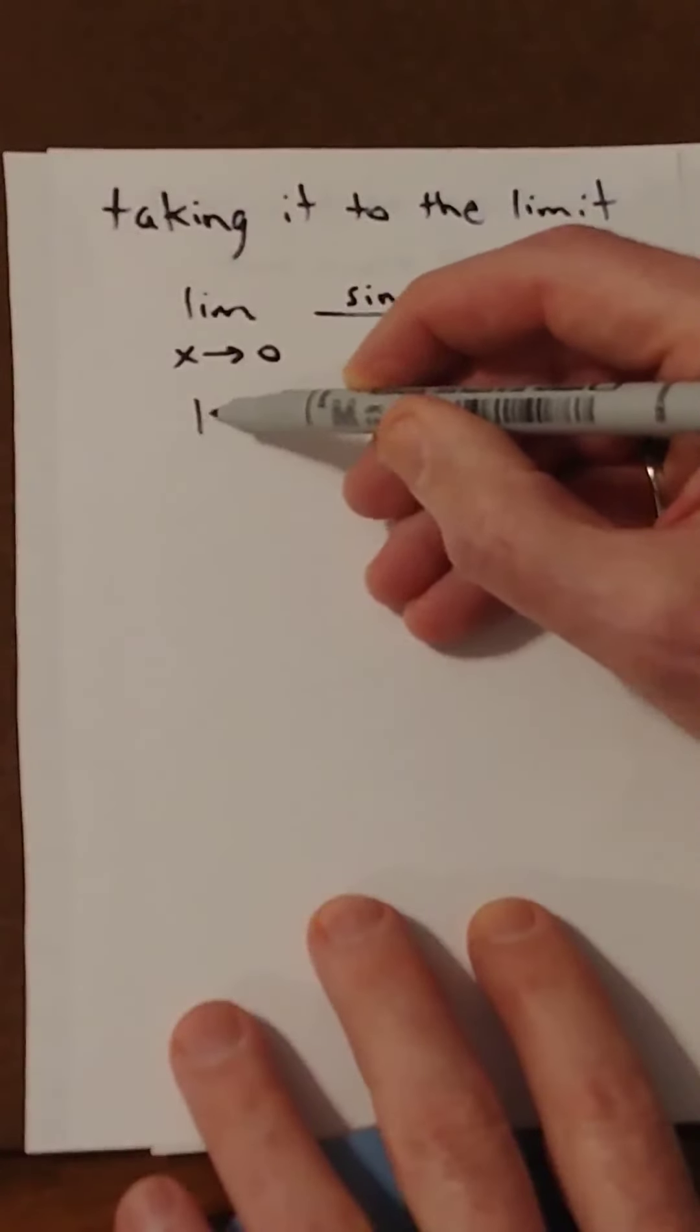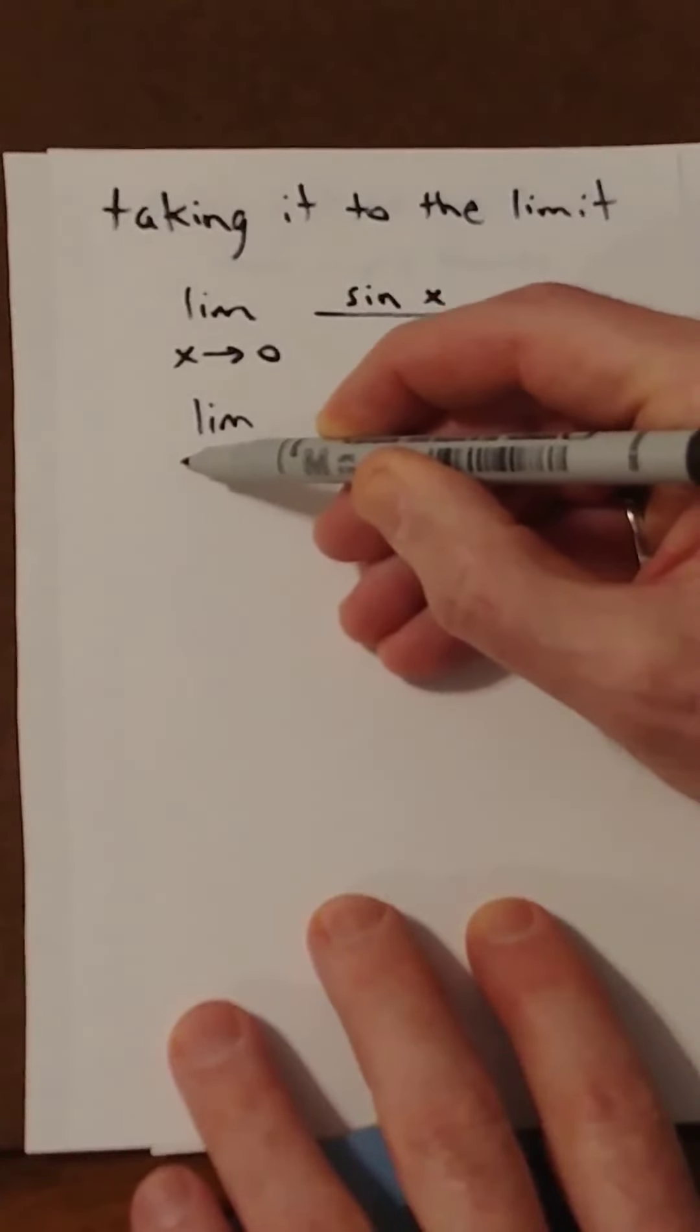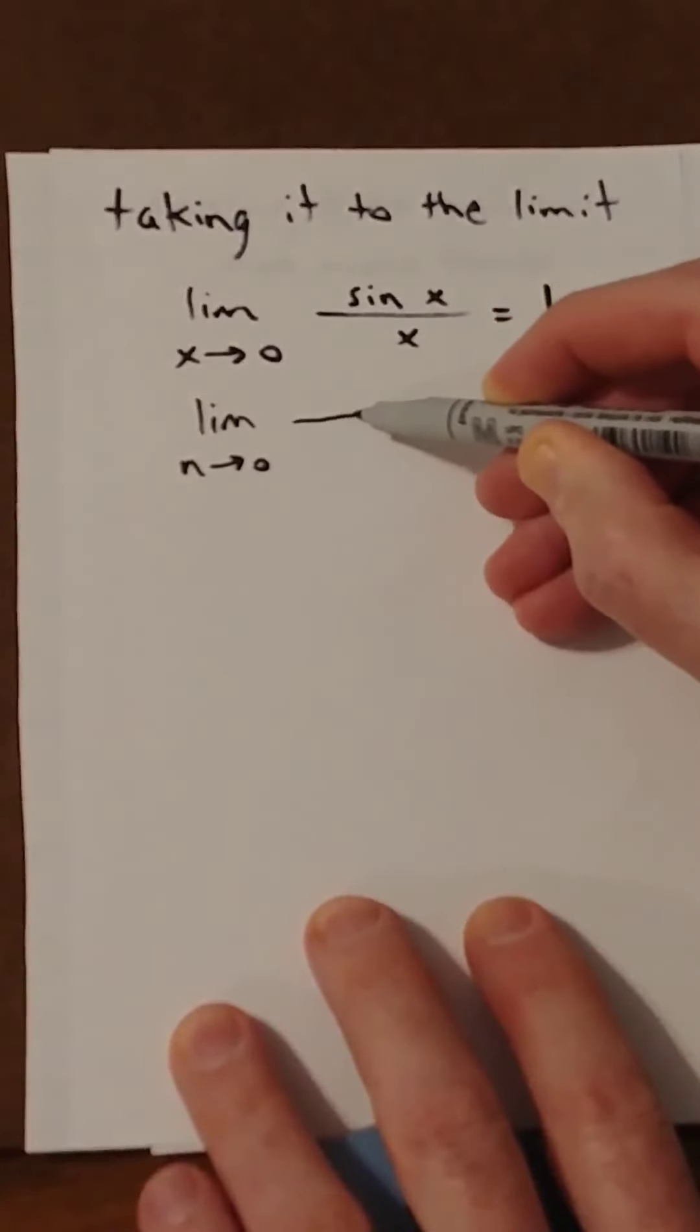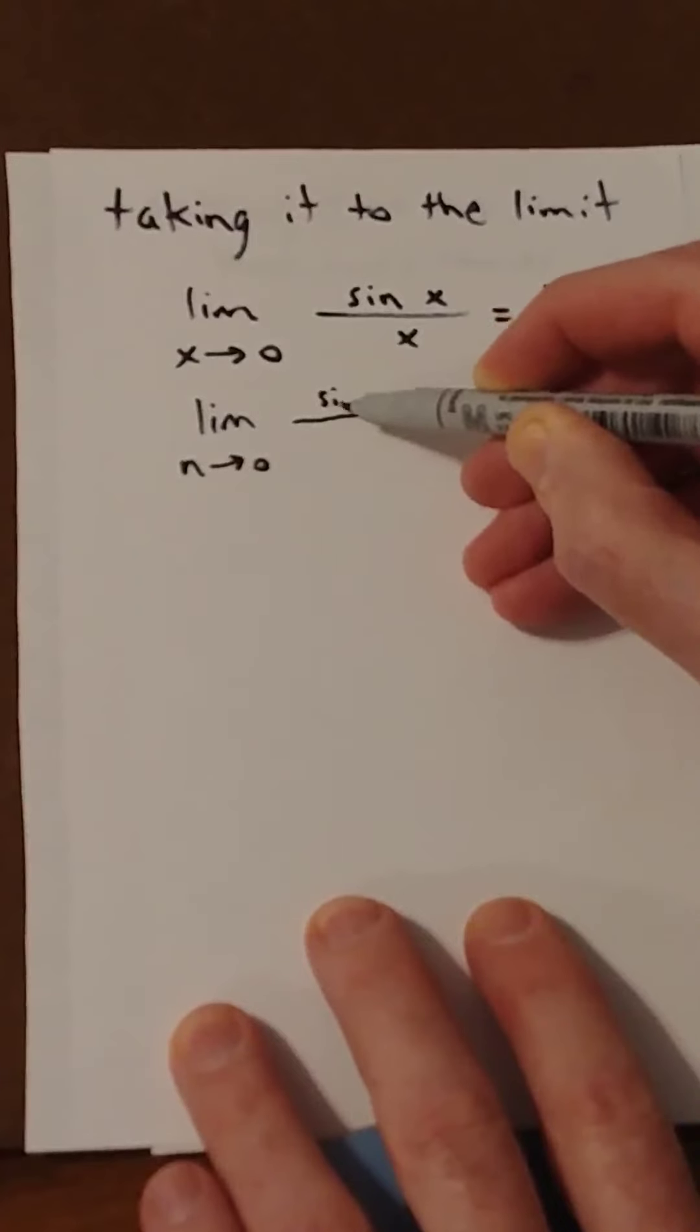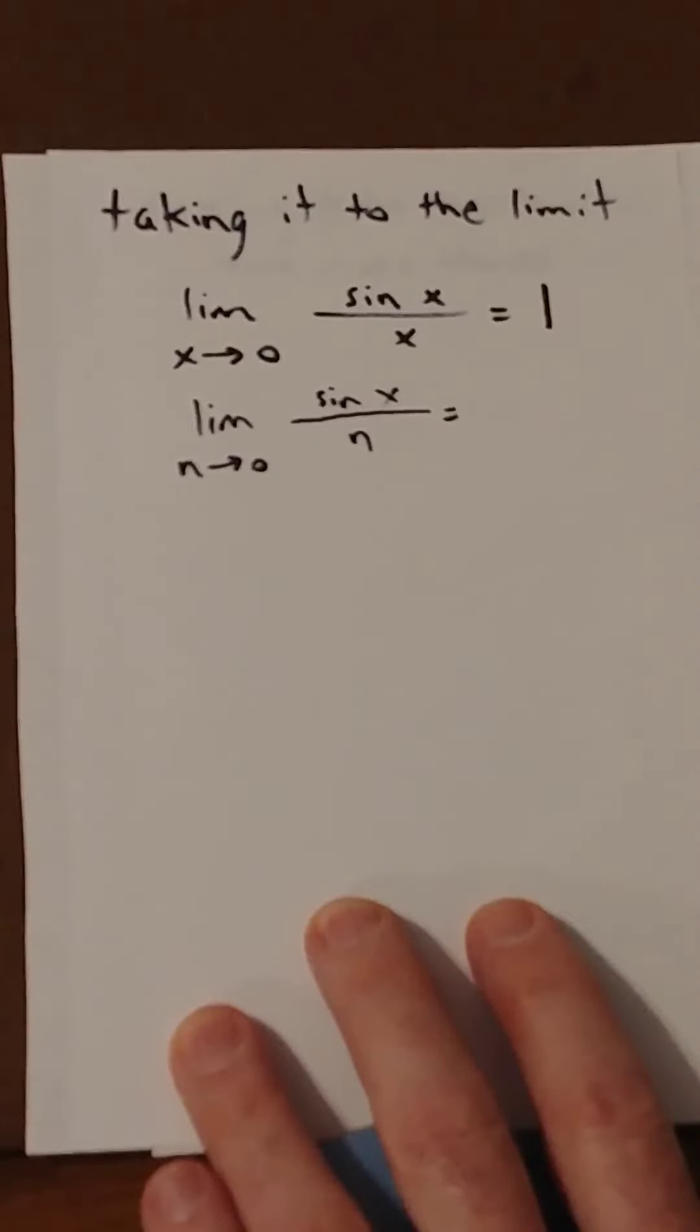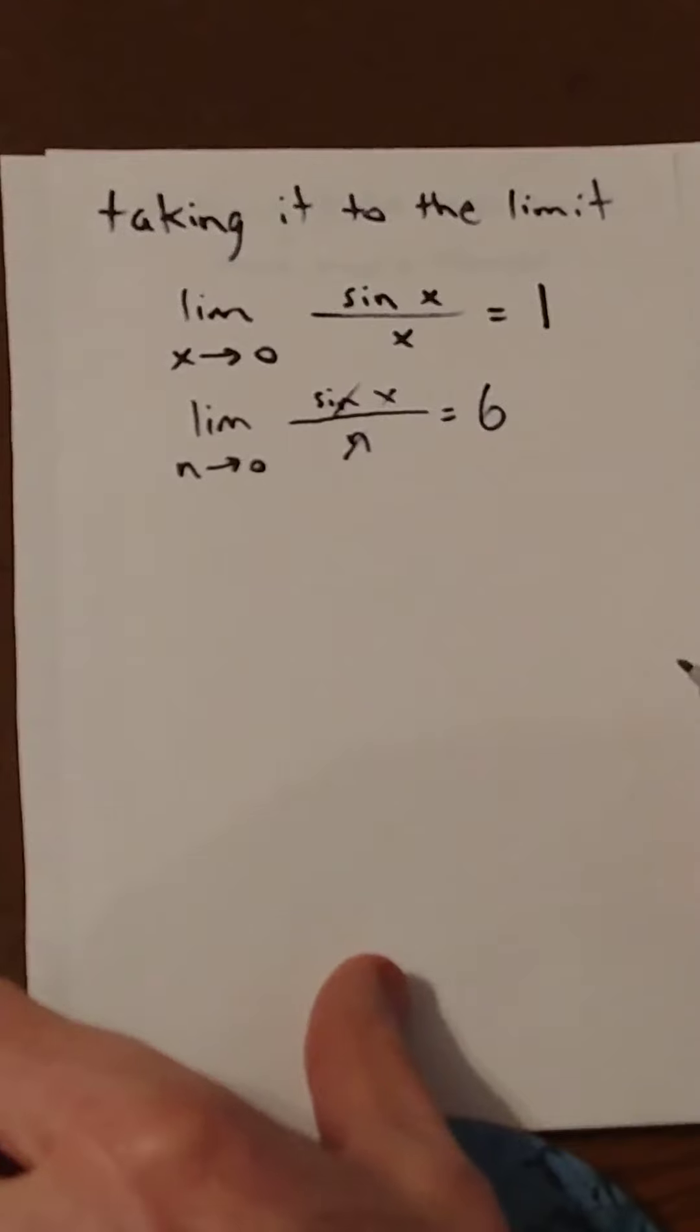But what about this one? The limit as n approaches 0 of sine x over n. What's that? Well, of course, that's just 6. All you've got to do is cancel the n's. Gotcha.